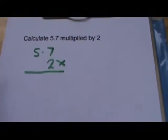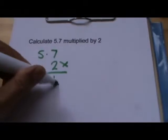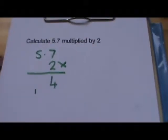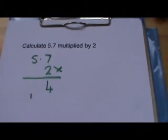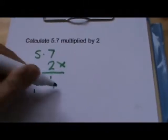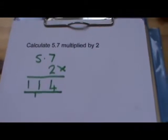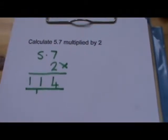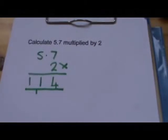So 2 times 7 is 14. And then 2 times 5 is 10. But we've carried one, so that makes 11. Then we need to decide where to put the point. So we said before, if you remember, the answer is going to be roughly 12.